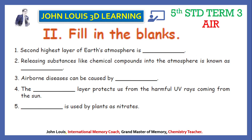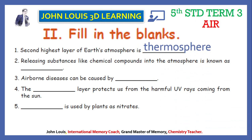Now let us move on to the second type — fill in the blanks. First: the second highest layer of Earth's atmosphere is thermosphere. You should know the order of the spheres. Second: releasing substances like chemical compounds into the atmosphere is known as air pollution. This same answer can be given for brief answer questions asking what is meant by air pollution.